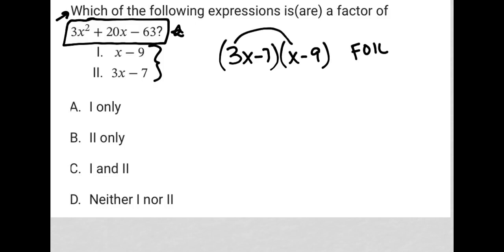So when I multiply the first terms, I get 3x squared. I multiply the outer terms, I get negative 27x. I multiply the inner terms, I get negative 7x, which I can already tell is going to be an issue because I want positive 20x in the middle.